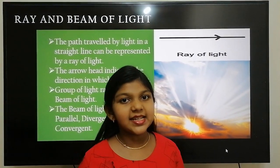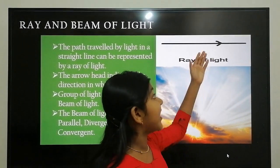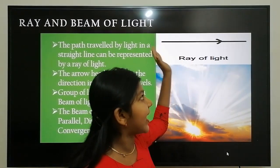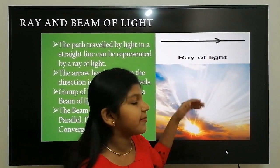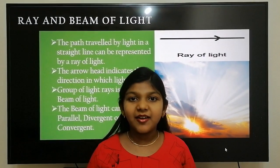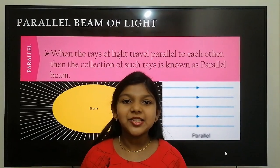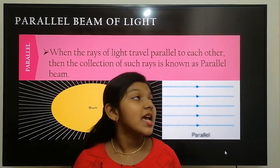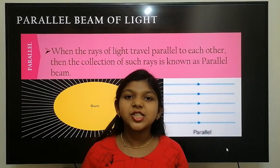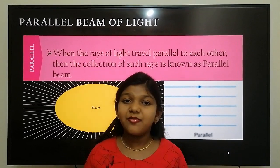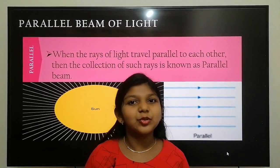The path travelled by light in a straight line is represented by a ray of light. The arrowhead indicates the direction in which the light travels. A group of light rays is known as a beam of light. A beam of light can be convergent, divergent, or parallel. When the rays of light travel parallel to each other, the collection of such rays is known as a parallel beam of light. An example of a parallel beam of light is sunlight entering a room through a window.